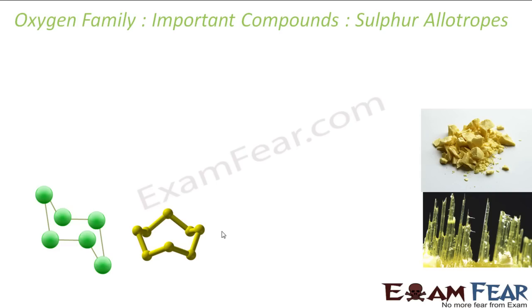Sulfur has various allotropes — in fact there are 20 sulfur allotropes, but we'll study some of the popular ones. We'll study three allotropes of sulfur: alpha, beta, and lambda.